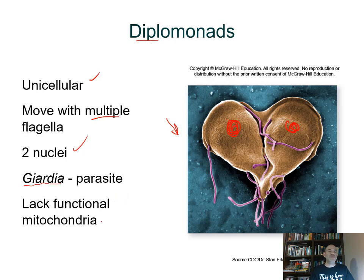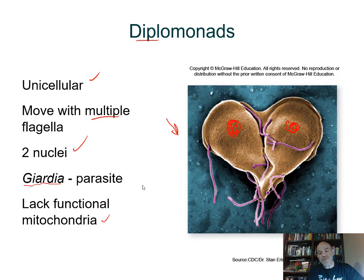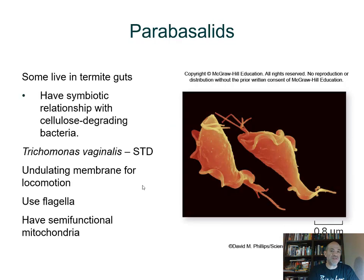What's interesting is that diplomonads lack functional mitochondria. One might ask: how do they carry out cellular respiration? That's a really important question worth researching. The big ideas here are: two nuclei, multiple flagella for diplomonads, they lack functional mitochondria, and the representative is Giardia, which is an intestinal parasite.